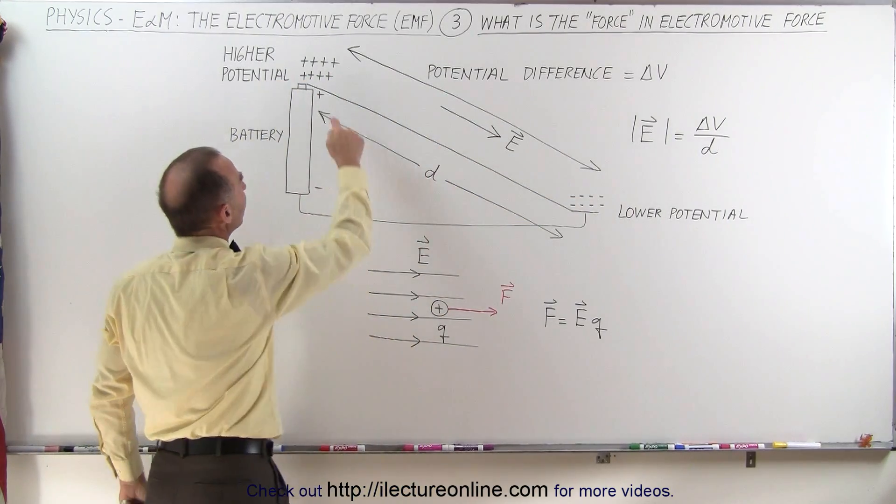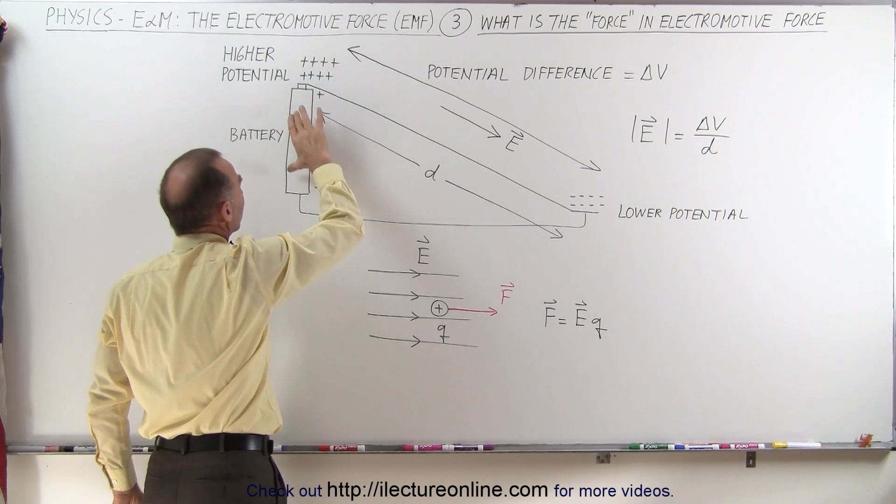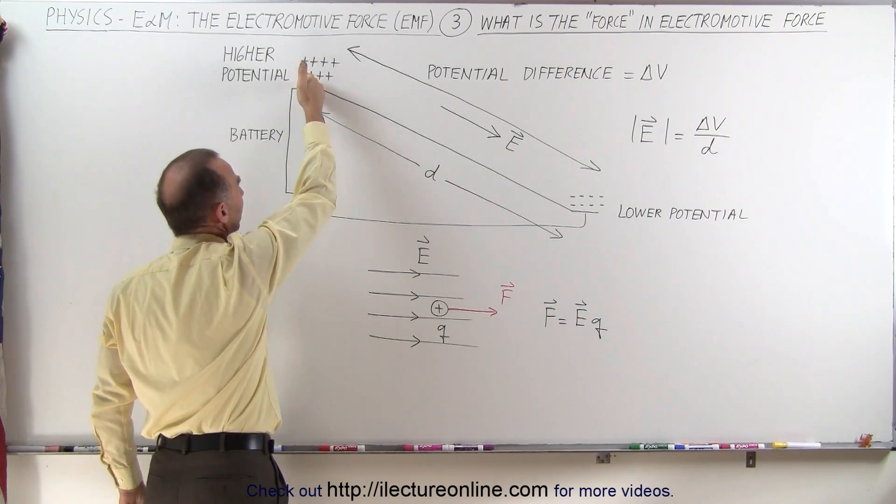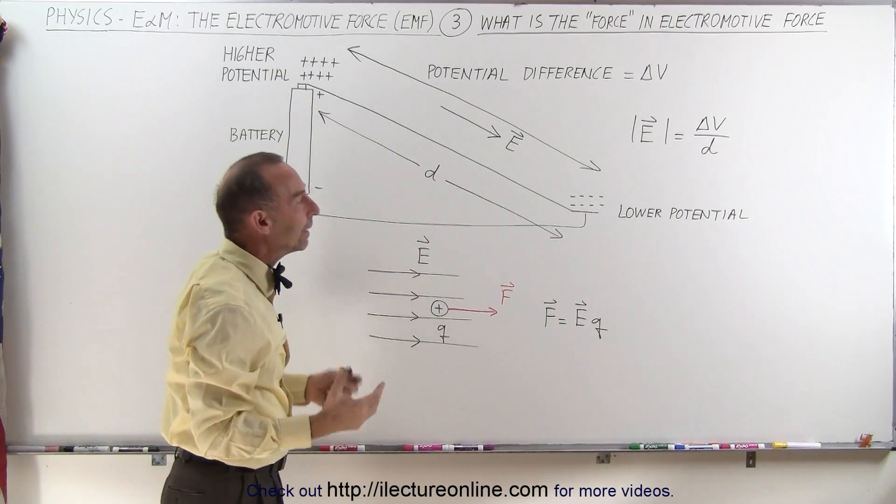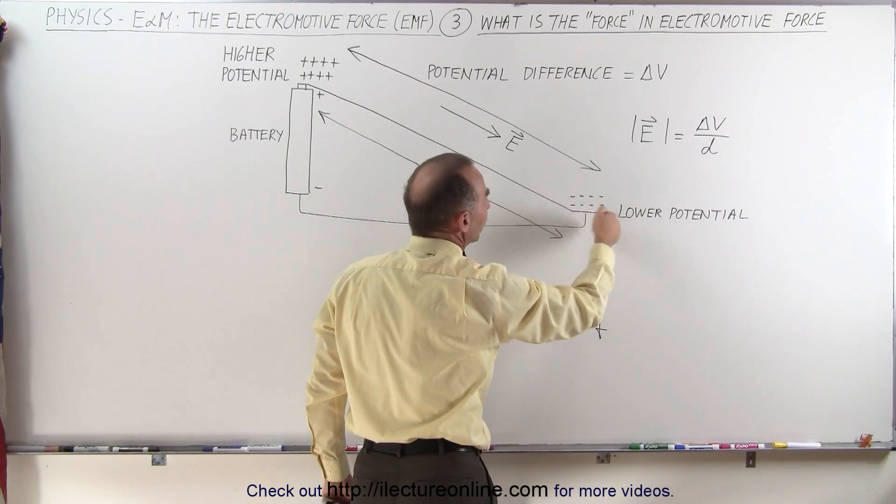Typically a higher potential is associated with an excess of positive charges and that's what a battery provides. It provides an excess of positive charges on one side and a lower potential is associated with an excess of negative charges.